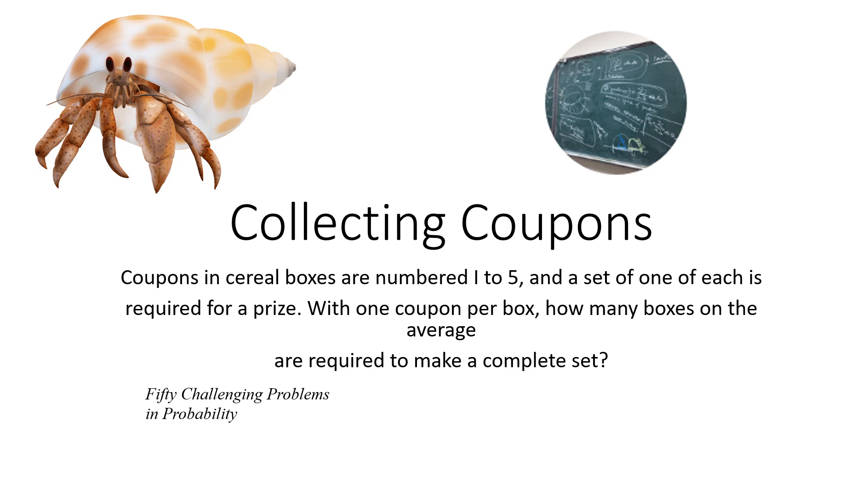The coupons in cereal boxes are numbered 1 to 5, and a set of one of each is required for a prize. With one coupon per box, how many boxes on average are required to make a complete set? This problem is very famous and appears in the 50 Challenging Problems in Probability.